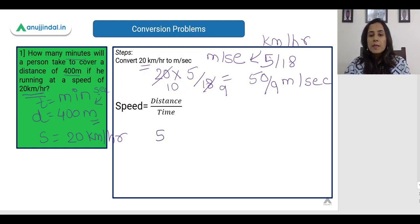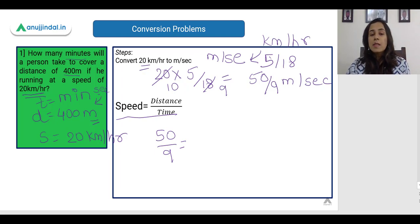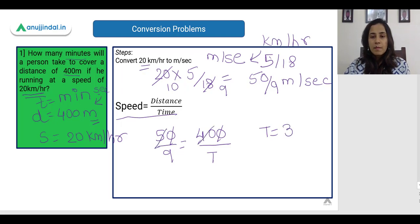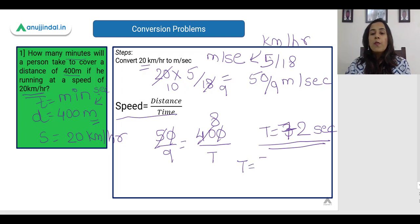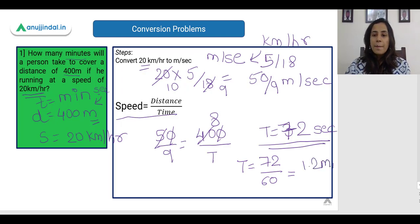Now we have converted speed to meters per second and we have the distance of 400 meters. Using the formula speed = distance / time, we get time = distance / speed = 400 ÷ (50/9) = 72 seconds. The question asks for the answer in minutes, so we divide by 60 and get 1.2 minutes. The right answer is 1.2 minutes.